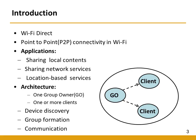Wi-Fi Direct has numerous applications, for example, local content sharing, sharing network services, location-based services, and many more. In Wi-Fi Direct, all communications occur in a group. A group consists of one group owner and one or more clients. The group owner should be a Wi-Fi Direct enabled station, while the client can be any regular Wi-Fi station. Most new mobile phones, tablets, and laptops come with Wi-Fi Direct technology.